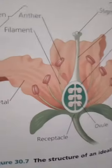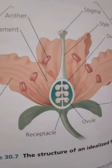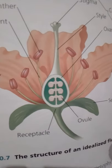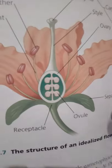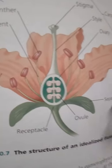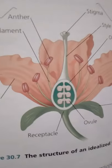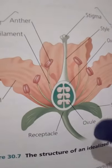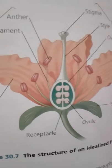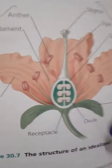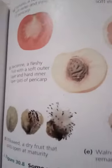Some angiosperms, such as garden peas, have flowers with a single carpel. Others, such as magnolias, have several separate carpels. Still other species, such as lilies, have two or more fused carpels, usually forming an ovary with a multi-locular chamber. A single carpel or a group of fused carpels is sometimes called a pistil.